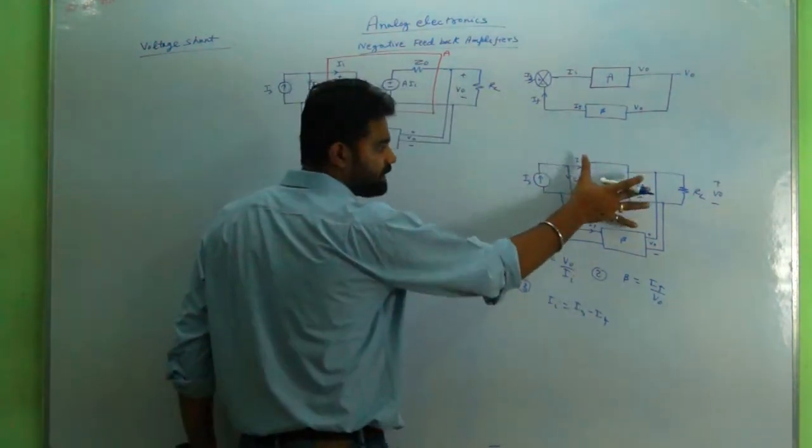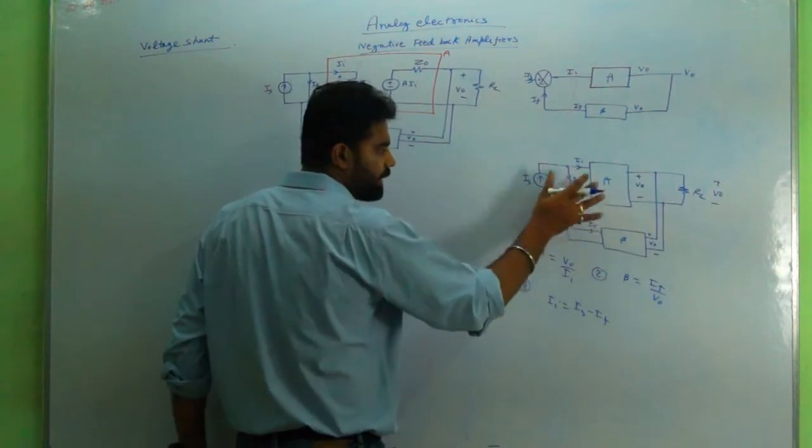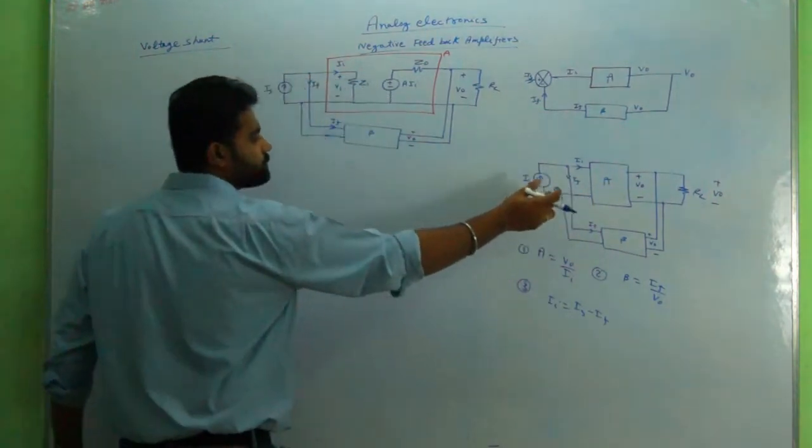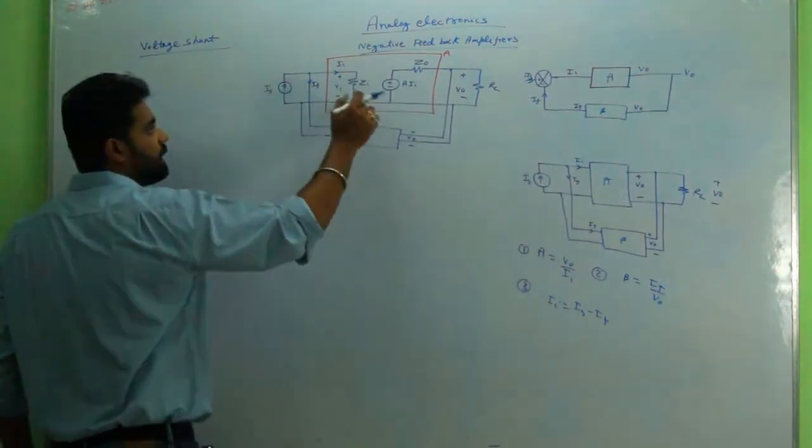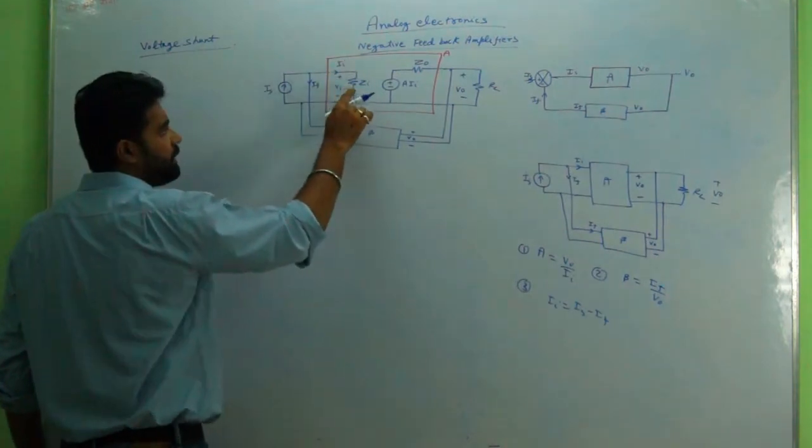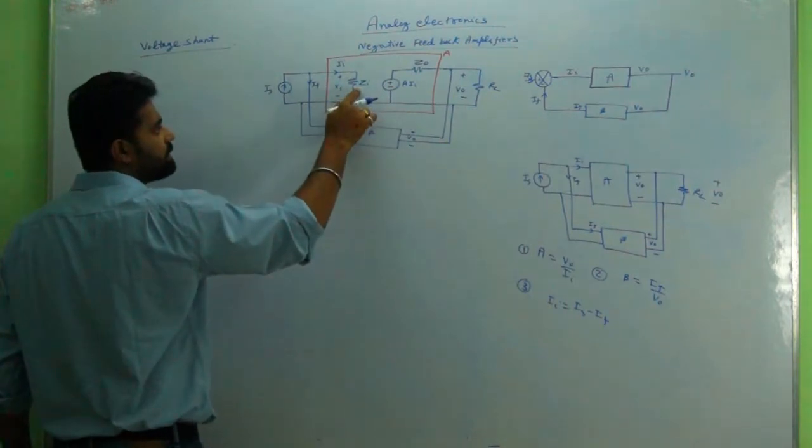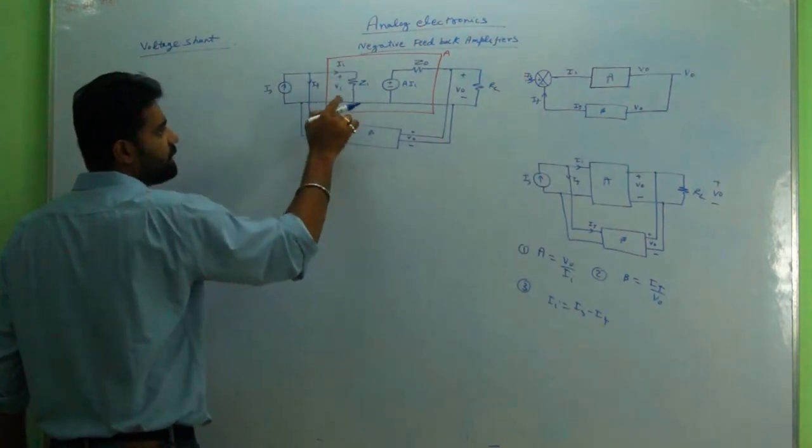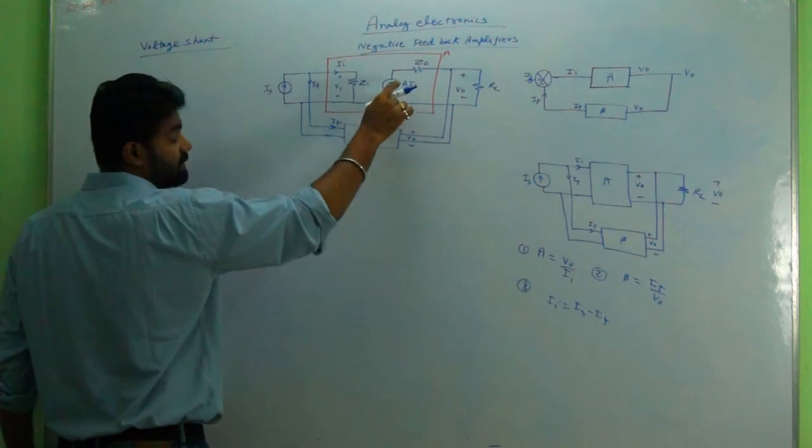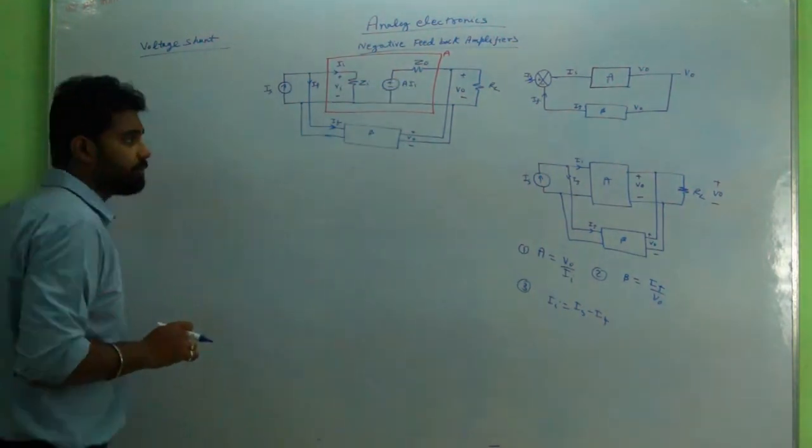For this, I've already drawn the diagram. Inside this A, ZI is there. From A we are getting inside that A, that is ZI is there, II is there, VI is there, and A into IS, that is the amplification is there, and Z0, the output impedance, is there.